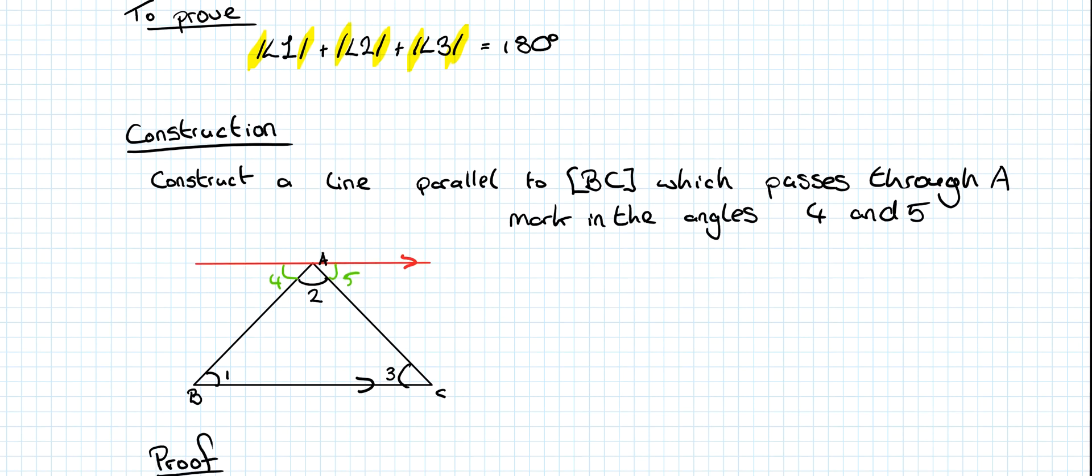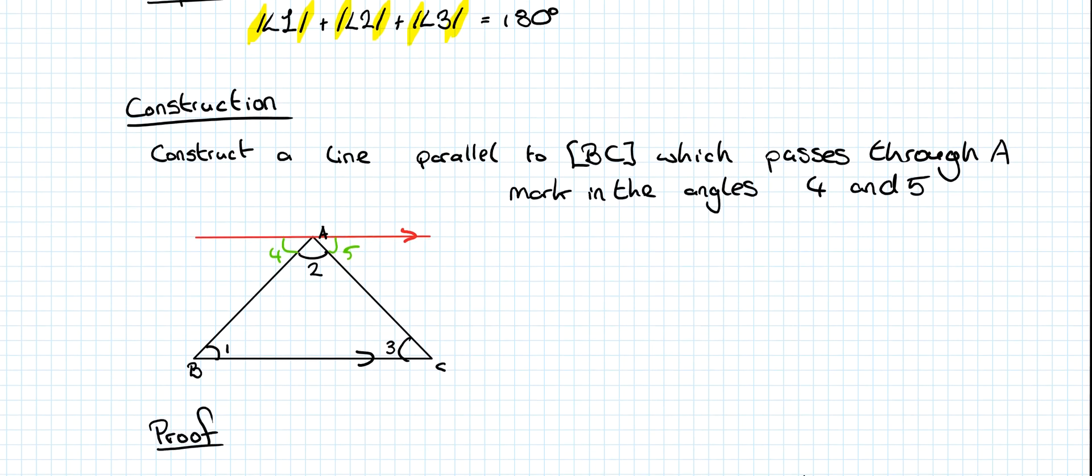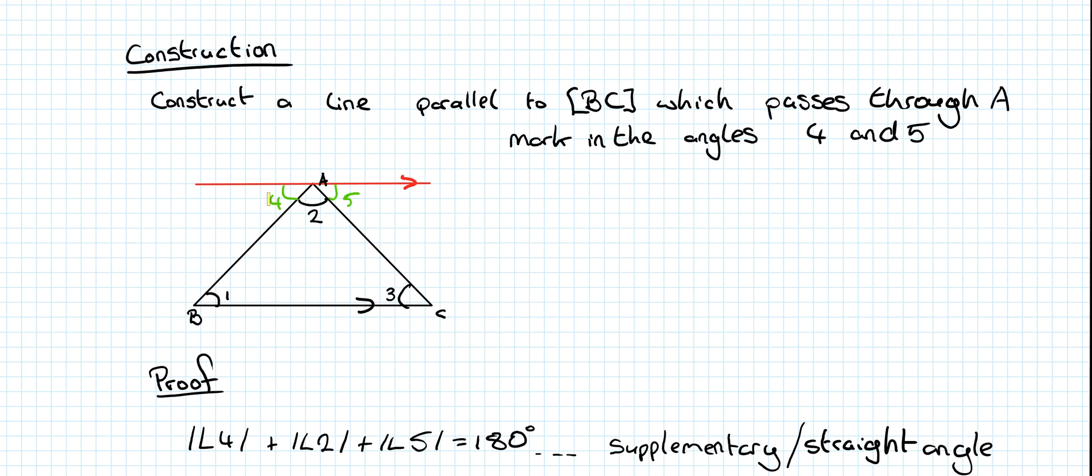Last step, the proof. What do we know? We know for a fact that the angles here—the measure of angle 4 plus the measure of angle 2 plus the measure of angle 5 is 180 degrees. And you must include this statement because they're supplementary angles or it's a straight angle.